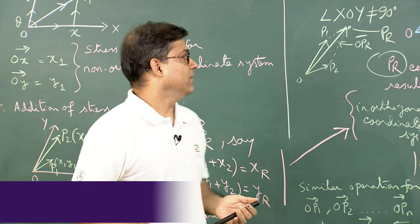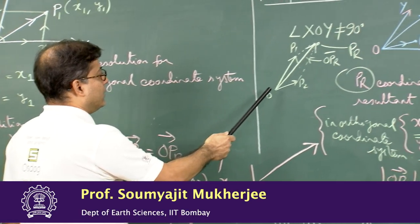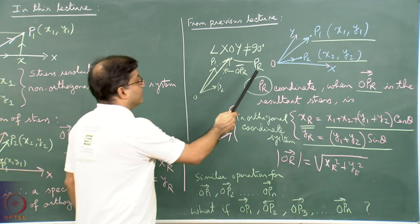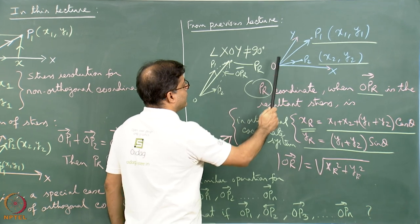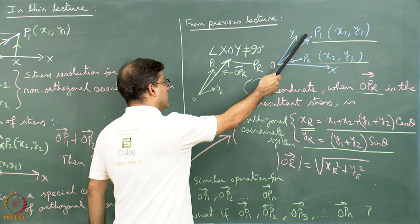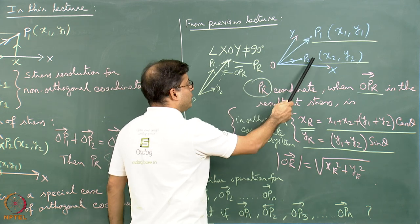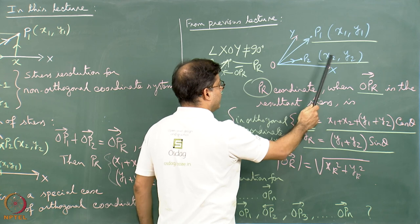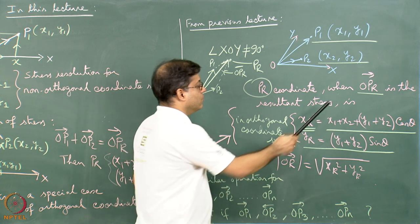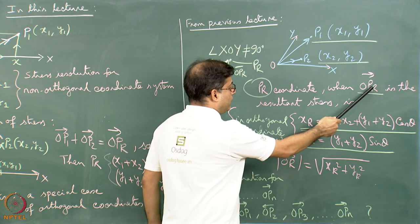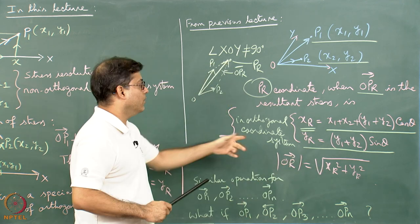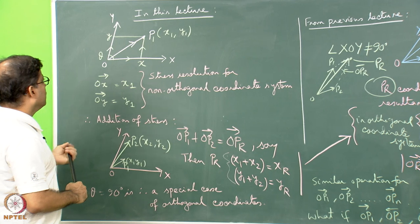In the previous lecture, we saw that in a non-orthogonal coordinate system, with vectors OP1 and OP2 where P1 has coordinates (X1, Y1) and P2 has coordinates (X2, Y2), the resultant OPR in the orthogonal coordinate system has coordinates XR and YR given by the corresponding expressions.